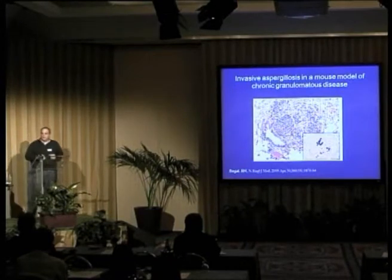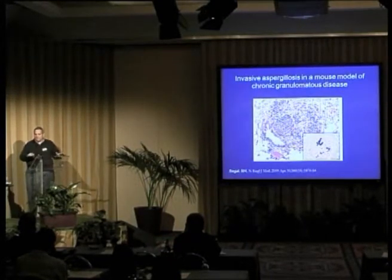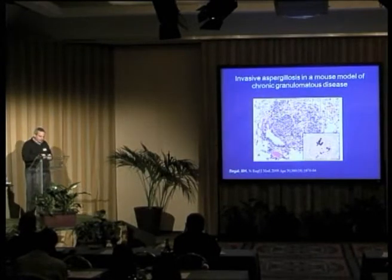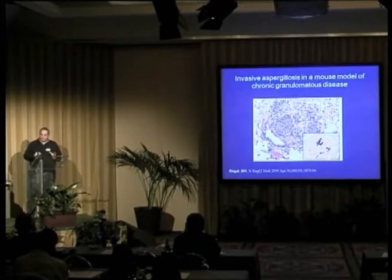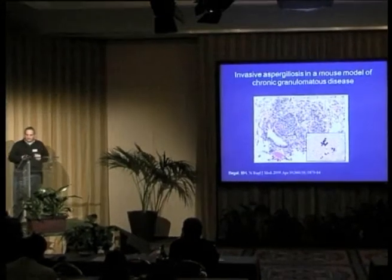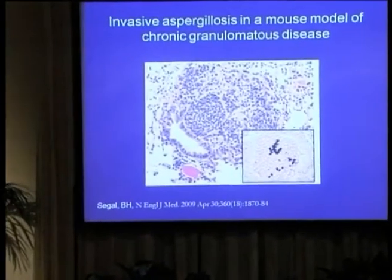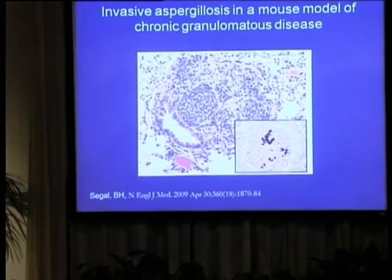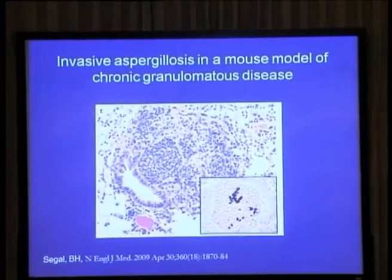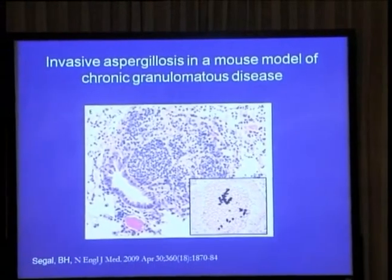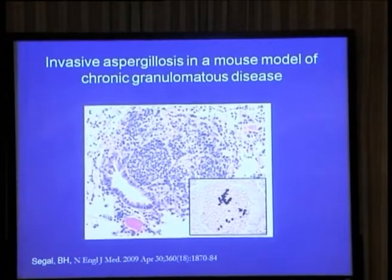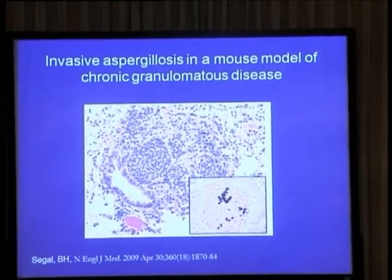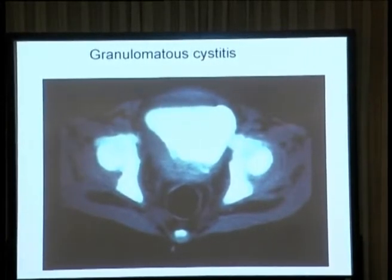If I gave aspergillus to a normal mouse — even a thousand-fold higher dose — the normal mouse would easily clear the infection. Histologically, we see inflammation surrounding the aspergillus hyphae but not able to adequately kill it. Interestingly, in CGD patients, the aspergillus usually does not go into blood vessels, whereas in other highly immunocompromised patients such as those receiving cancer chemotherapy — where chemotherapy wipes out neutrophils — the aspergillus often actually invades blood vessels.